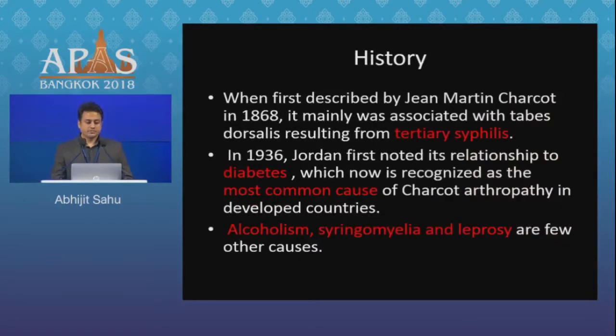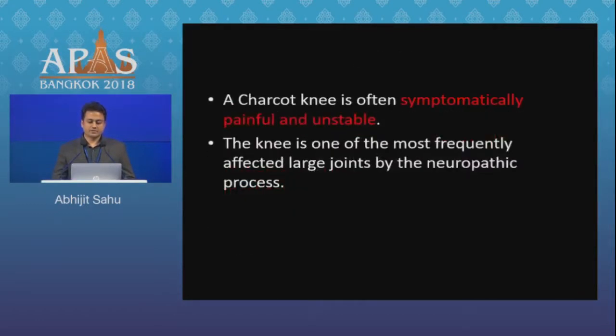When first described, it was mainly associated with tabes dorsalis resulting from tertiary syphilis. It was originally described as an arthritic sequelae of neurosyphilis by Charcot in 1868. Diabetes is now recognized as the most common cause. Alcoholism, syringomyelia and leprosy are few other causes.